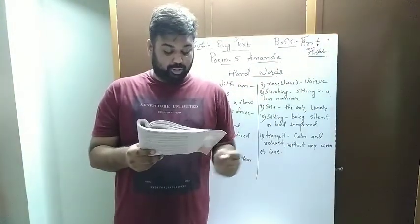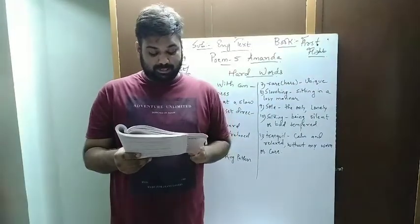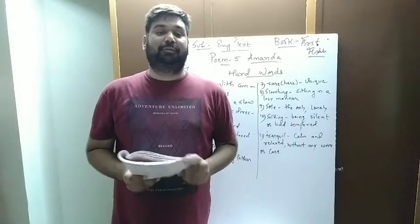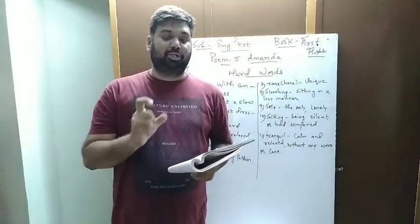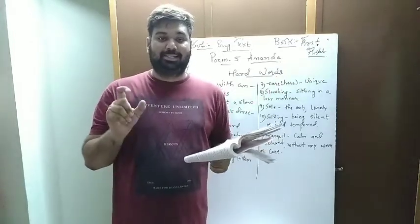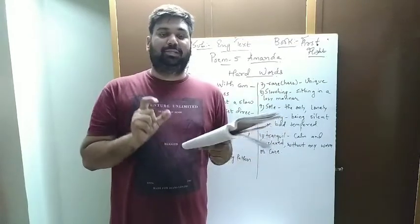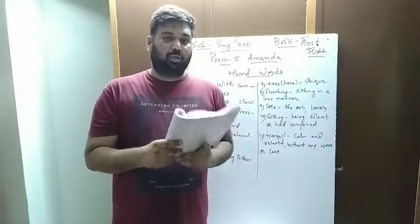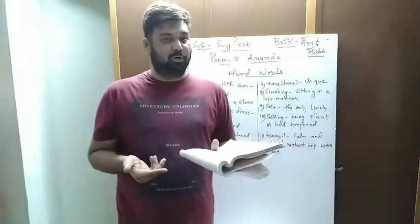The very first line says 'Don't bite your nails, Amanda' and 'Don't hunch your shoulders, Amanda.' The figure of speech here is repetition, because there is repetition of the word 'don't' in these two lines. While you are watching this video, you can also note it down in your notebook for future reference.